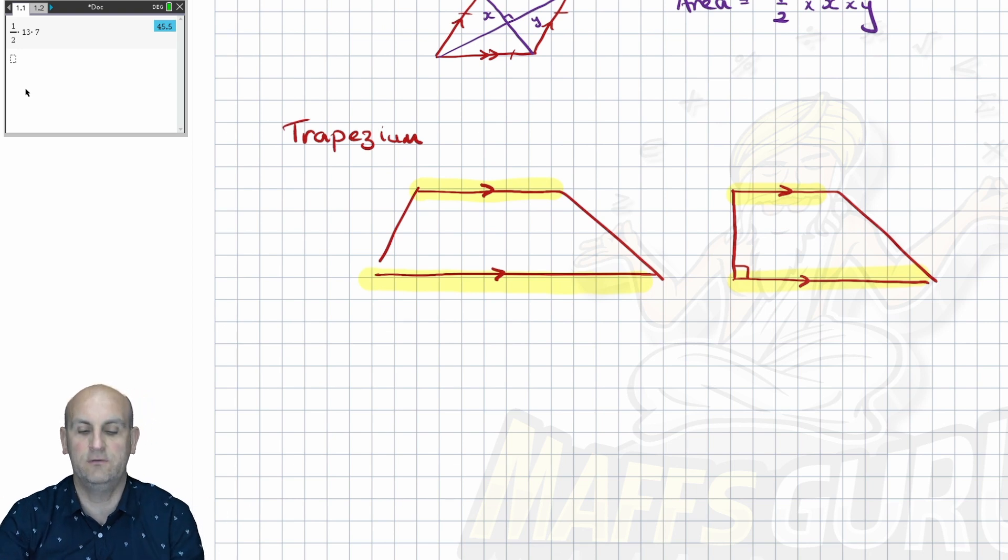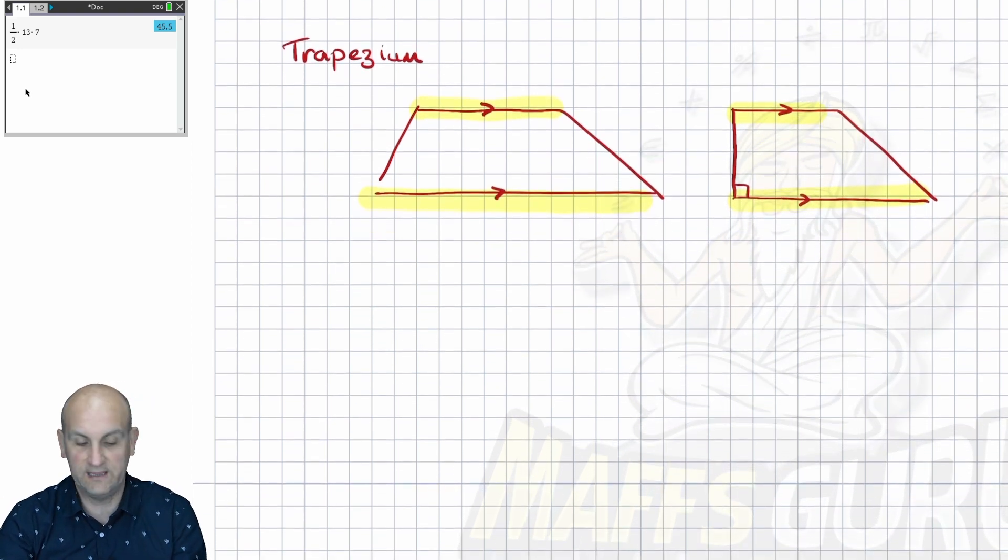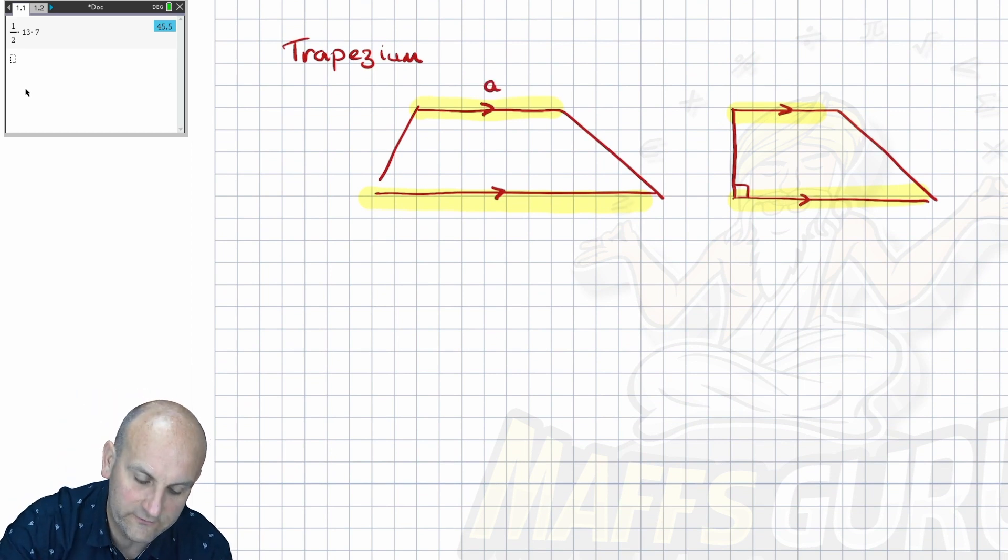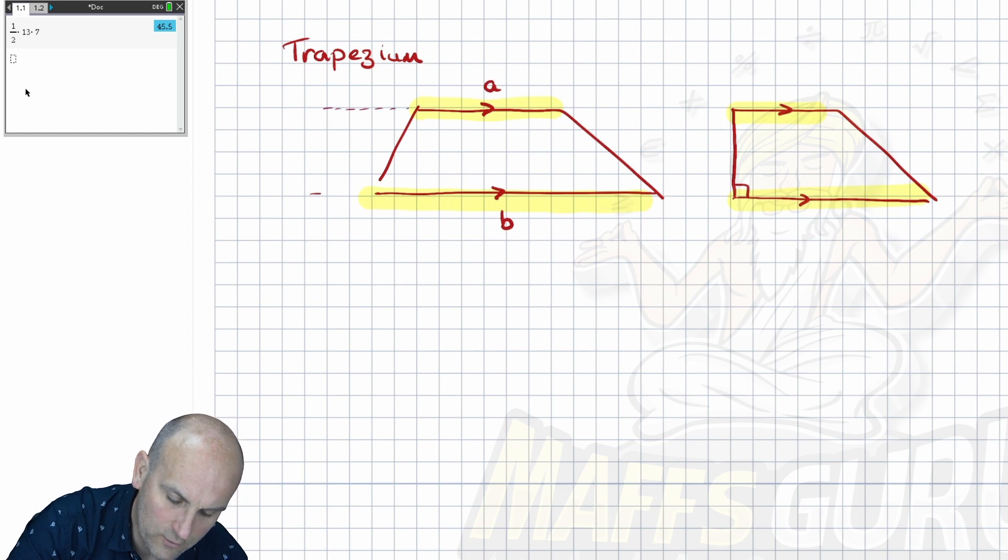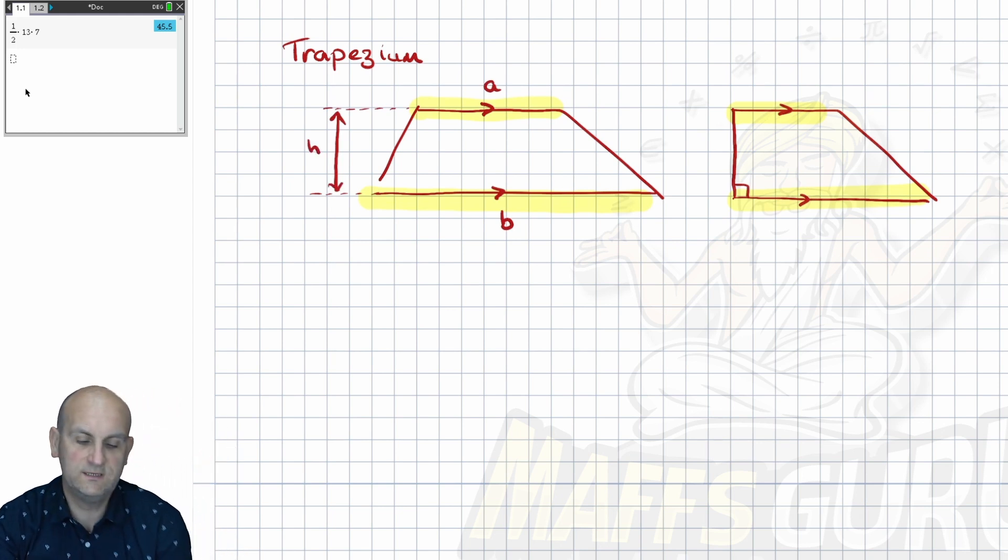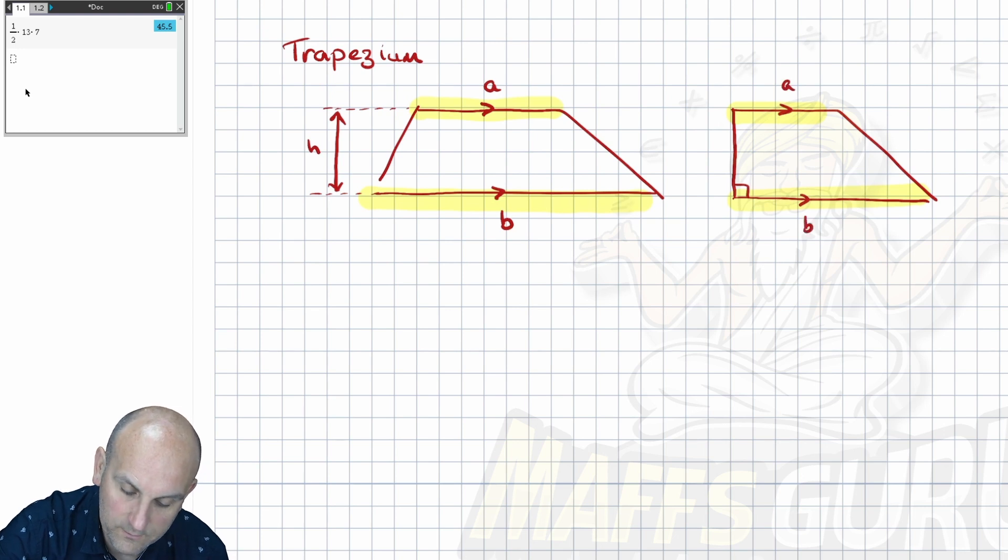No, you can actually find the area of these shapes quite easily. Now again, the way they do these is they use stupid letters again. So they normally call this A and B. And they'll normally have dotted lines and they'll give you something here called H, which is the height. So this here would be A for that one, that would be B, and that one there would be height.